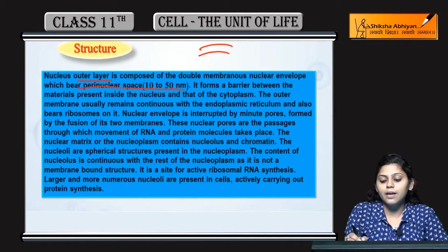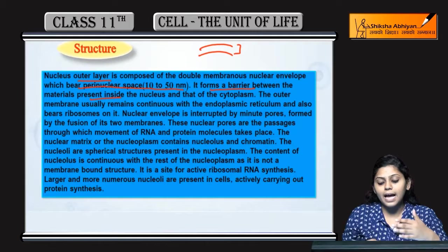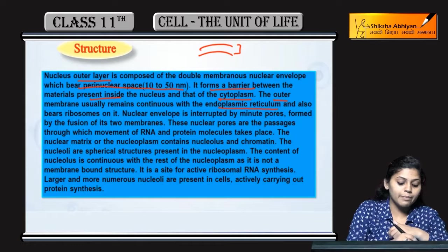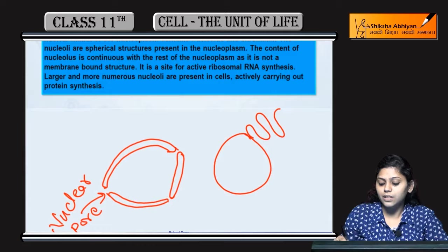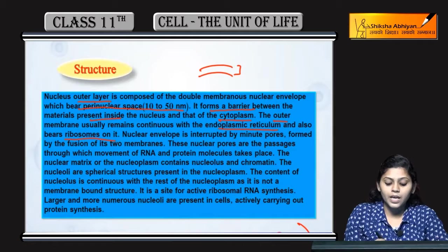Outer layer jo hoti hai double membrane ki — aur cytoplasm me jo material hota hai — outer membrane continuity mein rehti hai endoplasmic reticulum ke saath. Hamne jab endoplasmic reticulum study kiya tha, tab dekha tha ki endoplasmic reticulum nucleus se extend hokar plasma membrane tak extended rehti hai. To nucleus ki continuity endoplasmic reticulum me hoti hai.